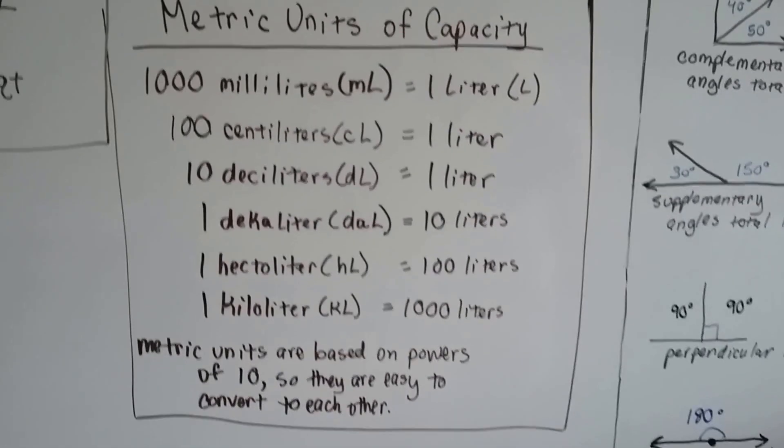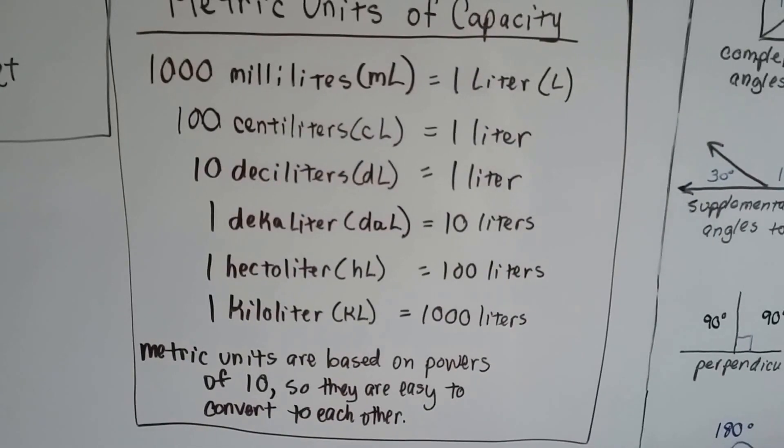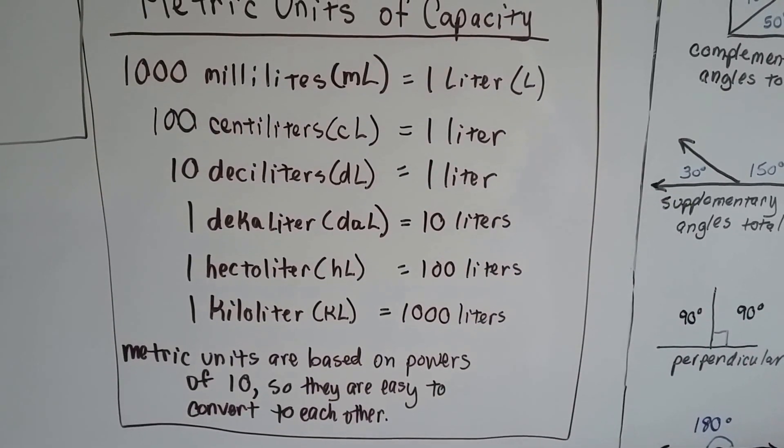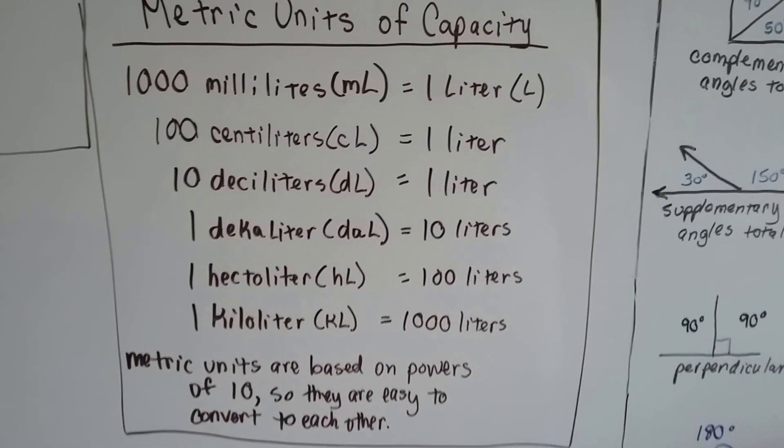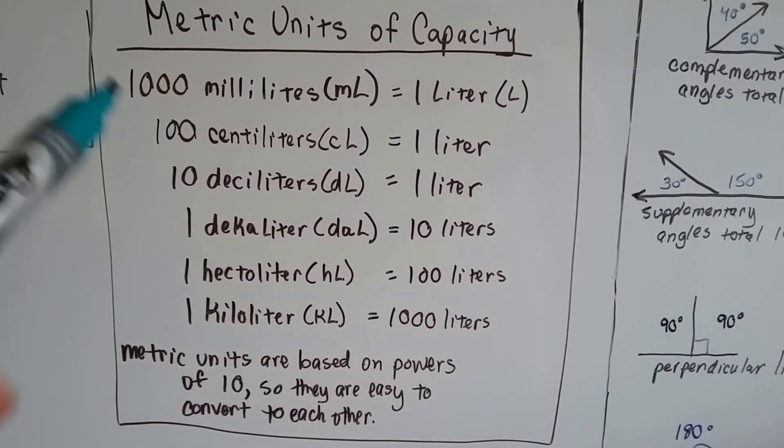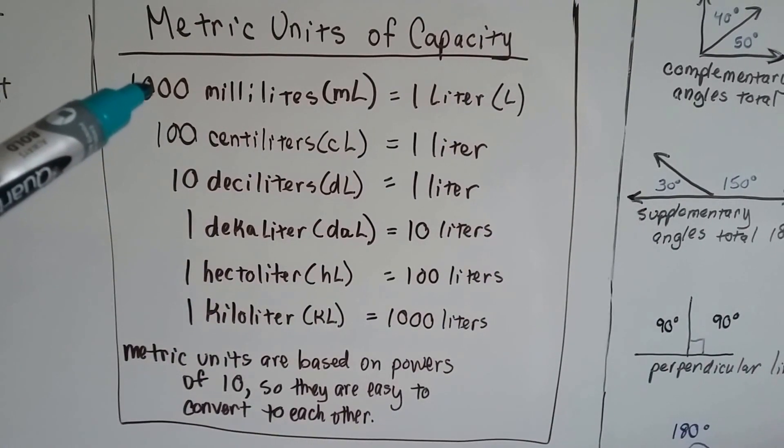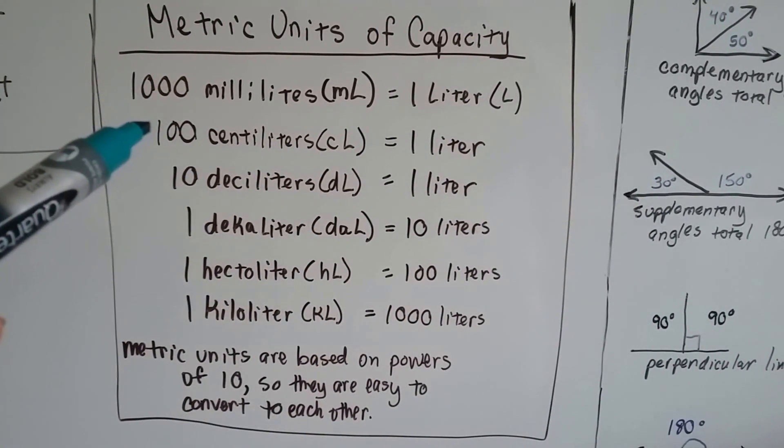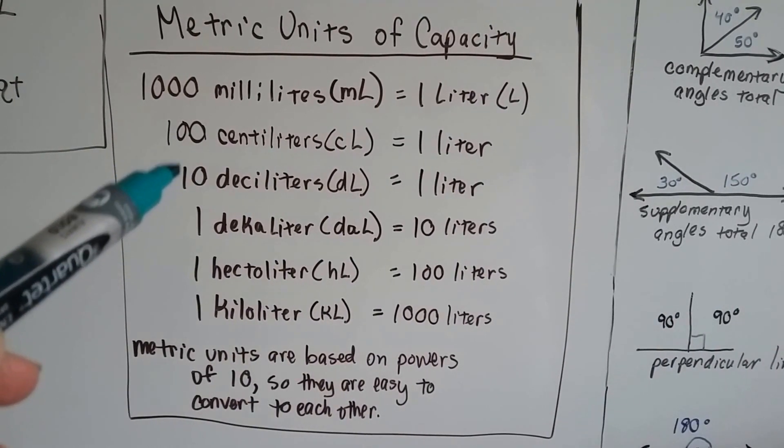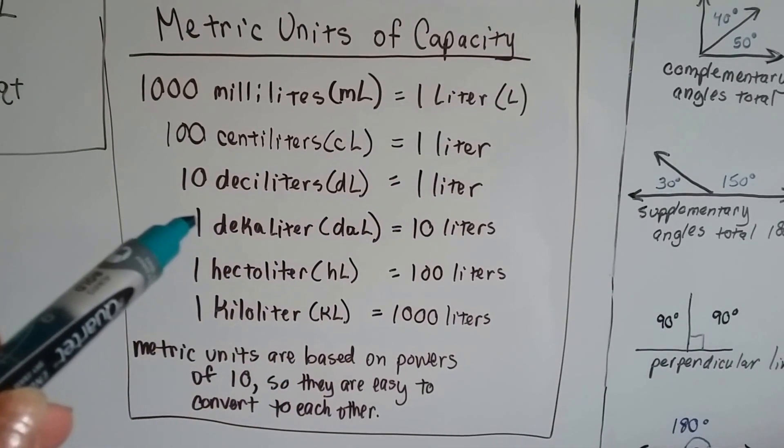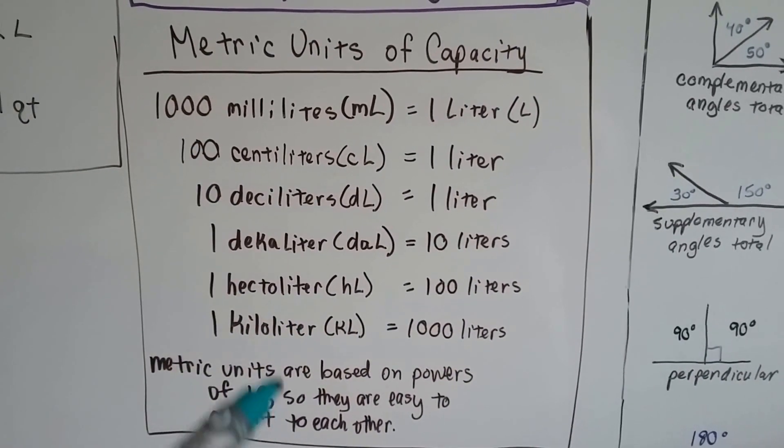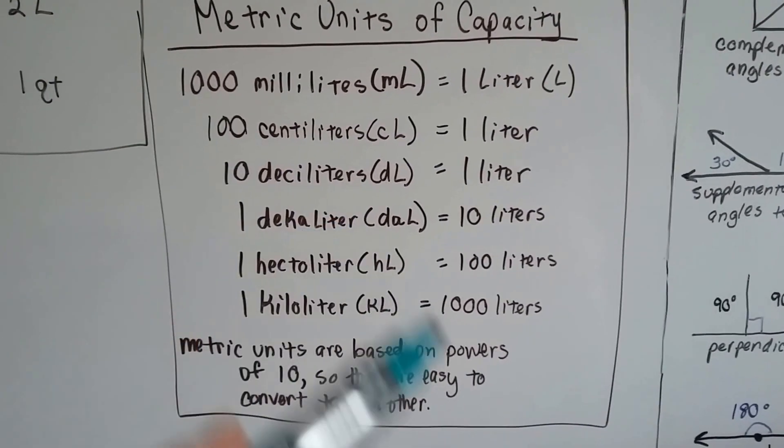For the metric units of capacity, we have milliliters, centiliters, deciliters, liters, decaliters, hectoliters, and kiloliters. This is all based on the powers of 10, so we can switch between them. 10 milliliters is 1 centiliter, 10 centiliters is 1 deciliter, 10 deciliters is a liter, 10 liters is a decaliter. They're all based on 10.